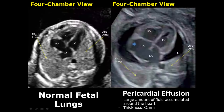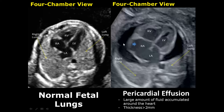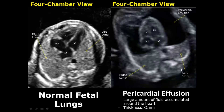Pericardial effusion is the accumulation of fluid around the heart. We can see this anechoic fluid around the heart. If the thickness is 2 mm or less, it is a normal amount of pericardial fluid, but if it is more than 2 mm it will be pericardial effusion. In this image, we have a large amount of fluid collection around the heart — a severe case of pericardial effusion.